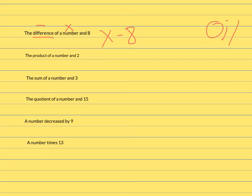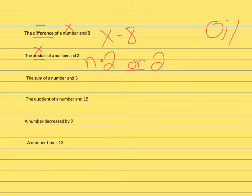The next one is the product of a number and two. Product means multiplication. So we're going to do n dot two, or you can write it as 2n. Remember, when they're next to each other, that means multiply.